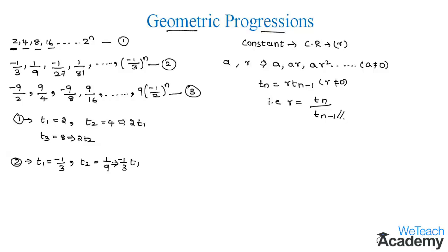Now let us consider an example over here. So here we have a geometric progression minus 2 divided by 3 comma minus 6 comma minus 54 and so on. Here the first term which is nothing but a is given as minus 2 by 3 and the second term is minus 6.